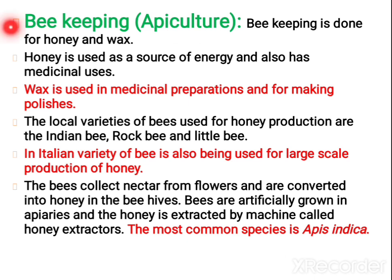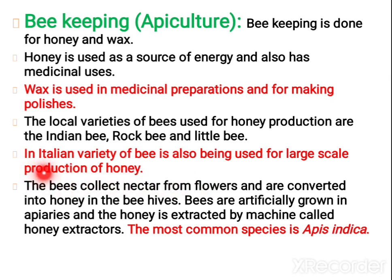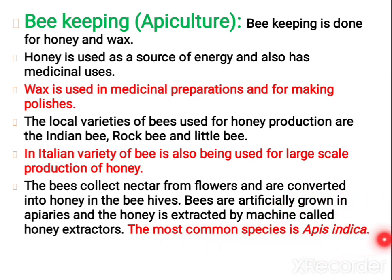Next, let us study regarding beekeeping, also called apiculture. Honey is the main product, and wax is also obtained from bees. Different varieties of bees include Indian bee, rock bee, and little bee. The Italian bee is used for large scale production of honey. Bees collect nectar from flowers and convert it into honey, storing it in beehives. Bees can be artificially grown in apiaries and honey is extracted by machines called honey extractors. The most commonly used species is Apis indica.